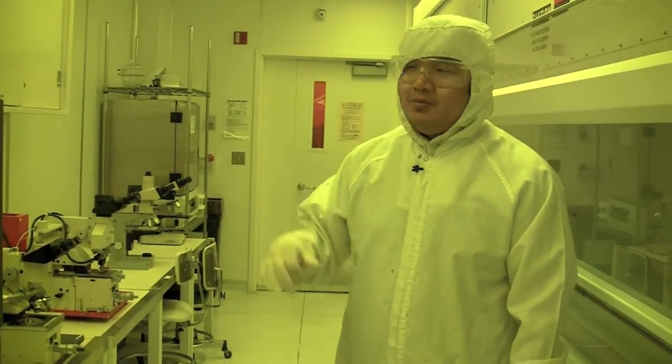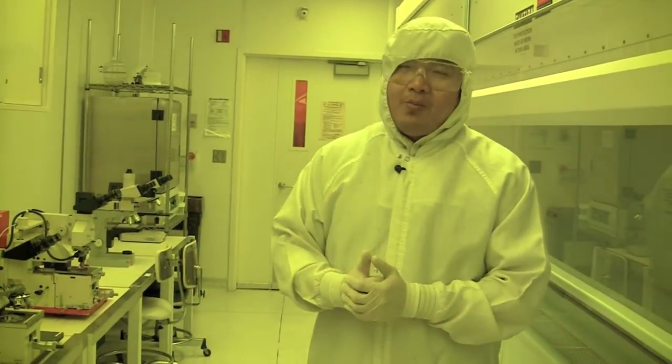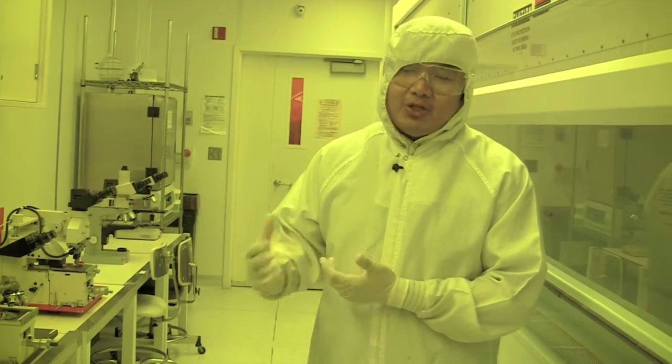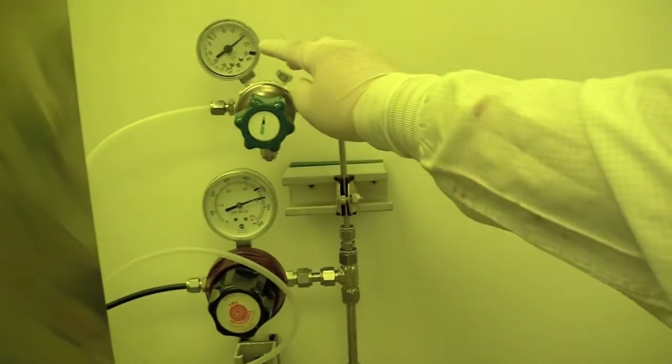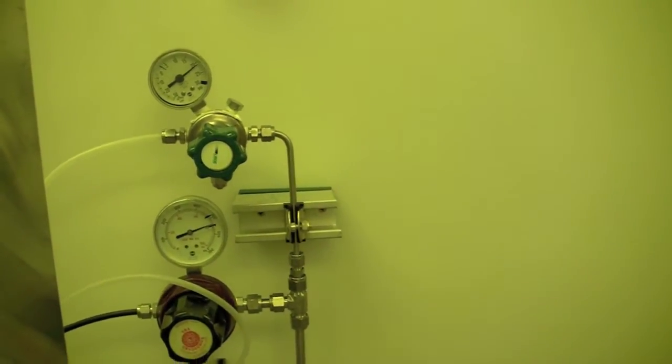And then once we refill the system, we'll go to the chaser's room and then make sure the pump is on. Also, we should look at the pressure gauges that are located here, and we can see that they're in between the ranges that we need to operate in.